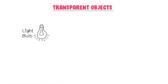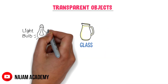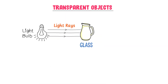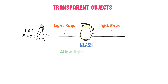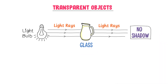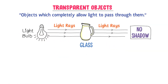We know that a luminous object produces light. I place a glass in front of this luminous object. Now light rays are hitting this glass. On the opposite side of the glass, we can see that all light rays are passing through it, because it allows all light to pass through and doesn't create any shadow. Therefore, we define transparent objects as objects which completely allow light to pass through them.